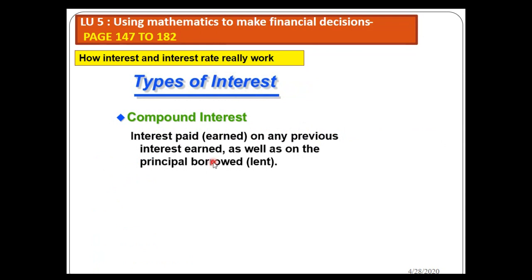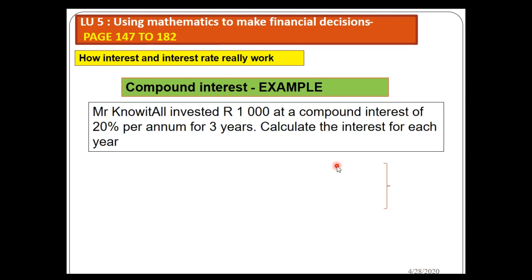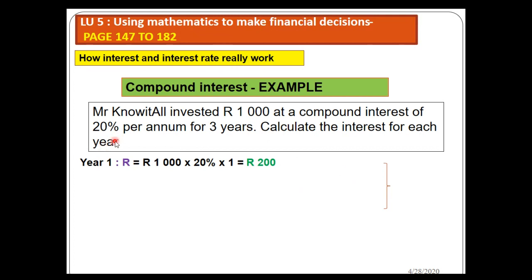Now let's focus on compound interest. Compound interest is calculated on any previous interest earned as well as on the principal amount. This is where we get interest on interest. For example: Mr. Know It All invested 1000 at a compound interest of 20% per annum for three years. Please calculate the interest for each year. Year one will be the same as simple interest: one thousand times 20% times one year equals two hundred.